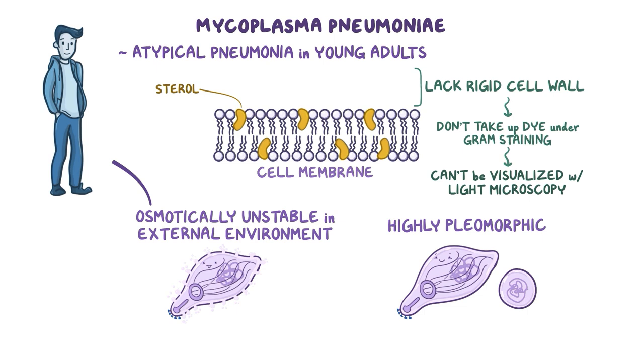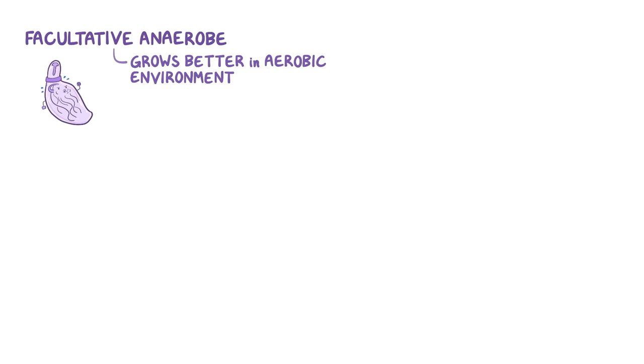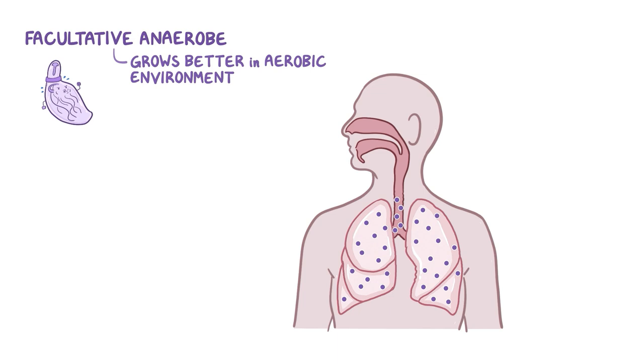So to survive, mycoplasmas invade host cells and live intracellularly. Mycoplasma pneumoniae is a facultative anaerobe, meaning that it can live without oxygen if it has to, but it grows better in an aerobic environment. So it prefers places like lungs or respiratory airways, where there's an unlimited flow of oxygen.